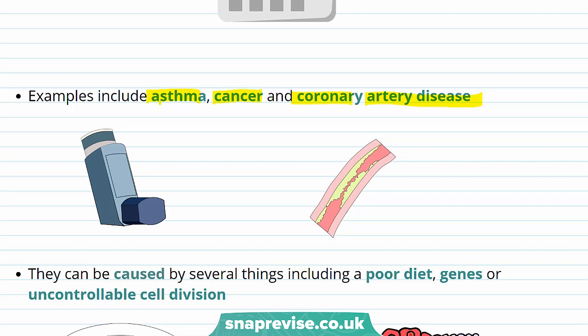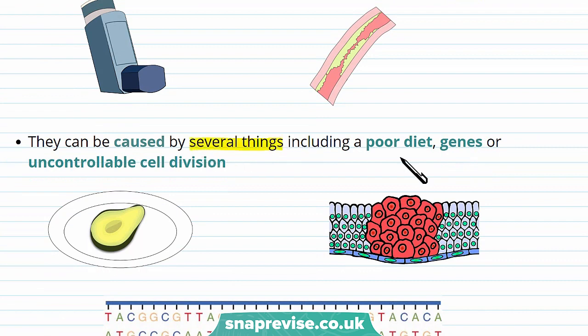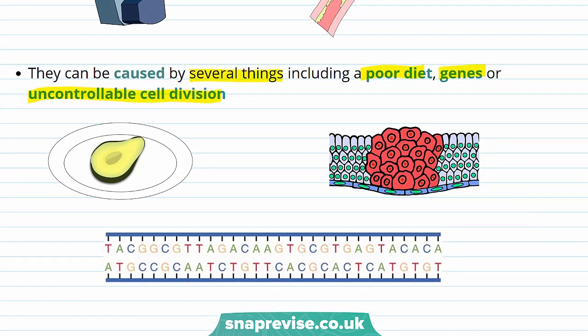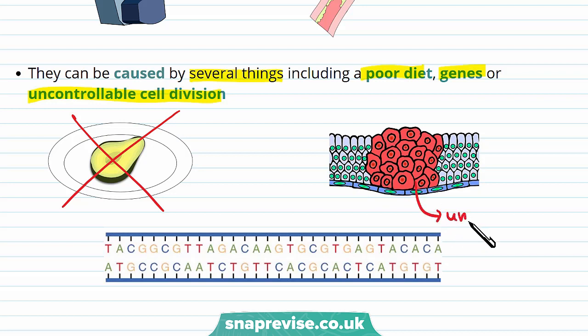So if non-communicable diseases can't be spread, what are they caused by? They can be caused by several different things, including a poor diet, genes, or uncontrollable cell division. For example, a diet that doesn't include many fruits and vegetables can lead to mineral or vitamin deficiencies. The genes you inherit from your parents may also cause non-communicable diseases — for example, you may inherit a mutation that causes an inherited disorder such as cystic fibrosis. Another cause is uncontrolled cell division by the cells in your body, which can lead to cancer.